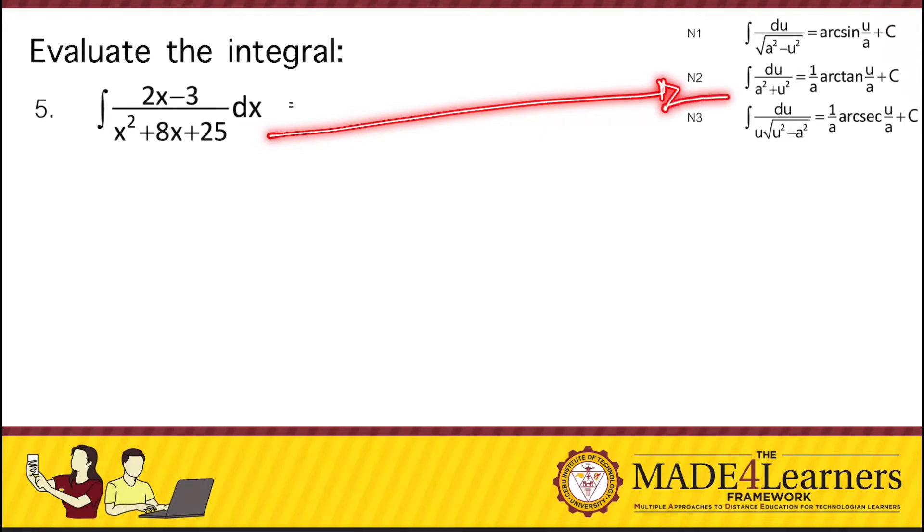But take note that the denominator has a pattern a squared plus u squared and in the numerator it's only 1. So first we try if we can simply use integration by substitution by letting u equals x squared plus 8x plus 25.